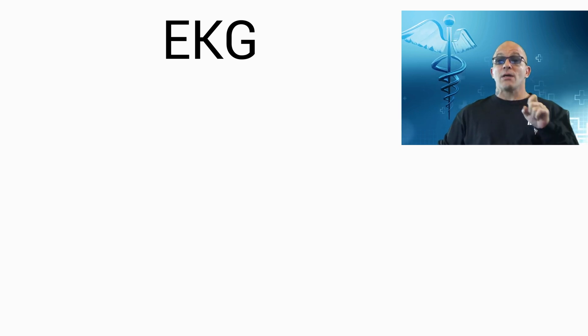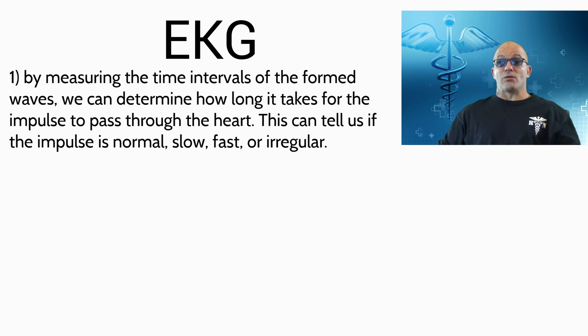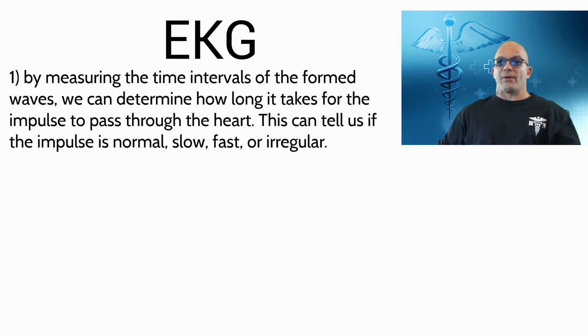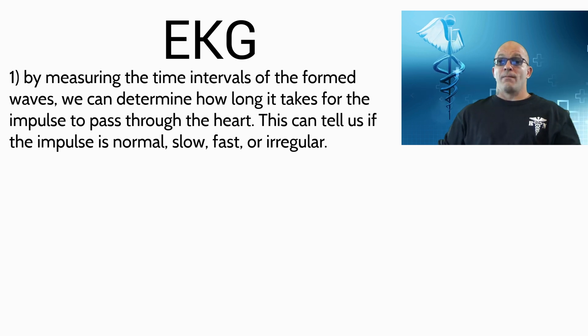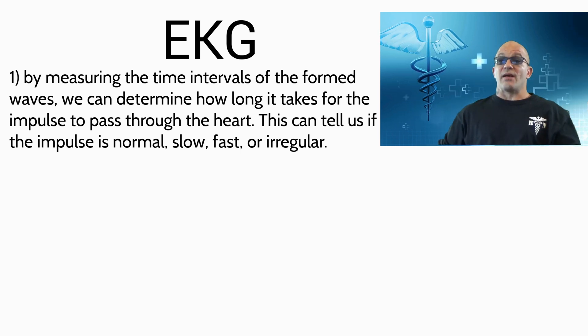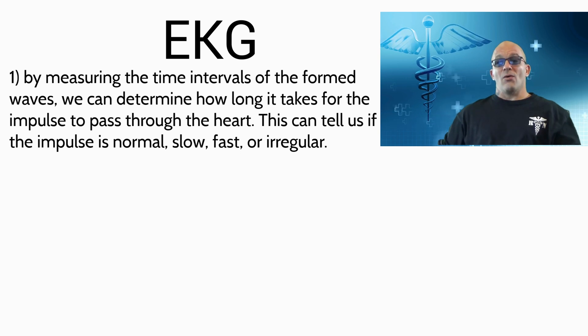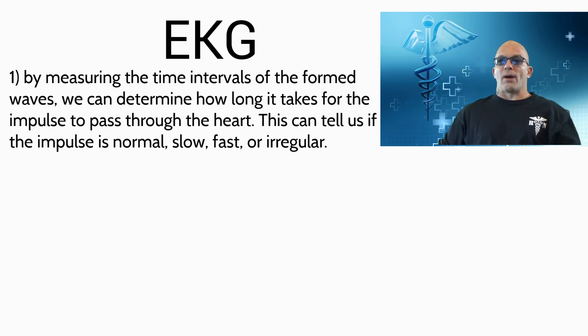So, you must be wondering what an EKG will tell us. It gives us two major kinds of information. First, by measuring the time intervals of the formed waves, we can determine how long it takes for the impulse to pass through the heart. This can tell us if the impulse is normal, slow, fast, or irregular.